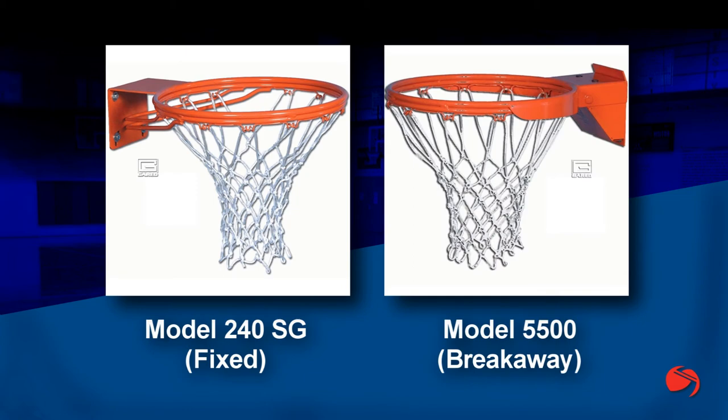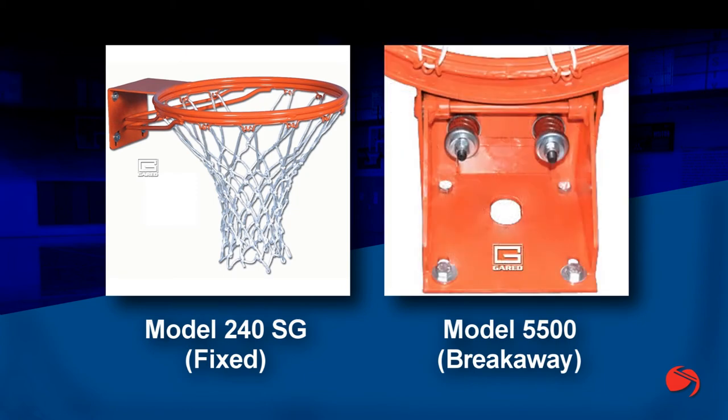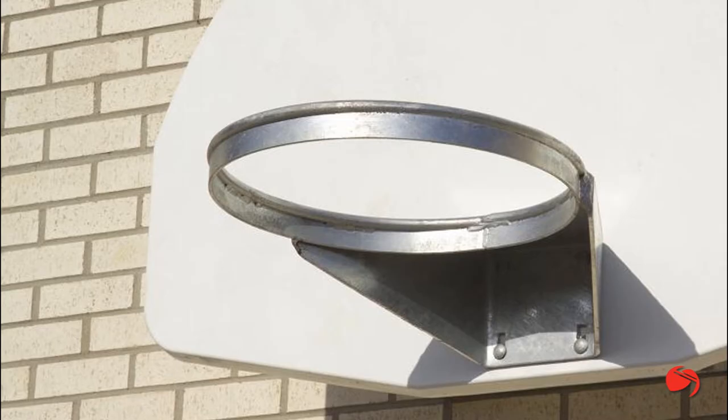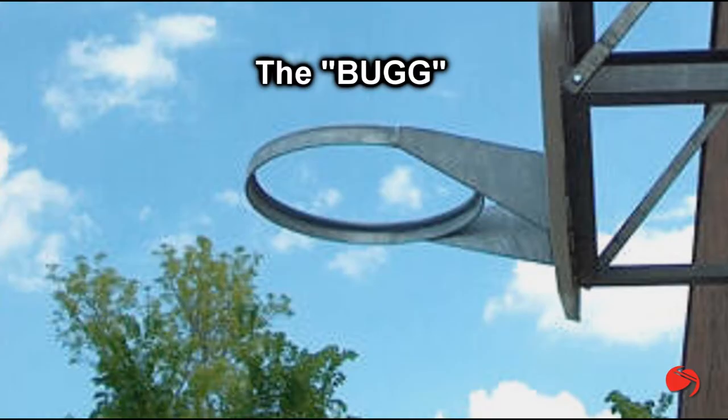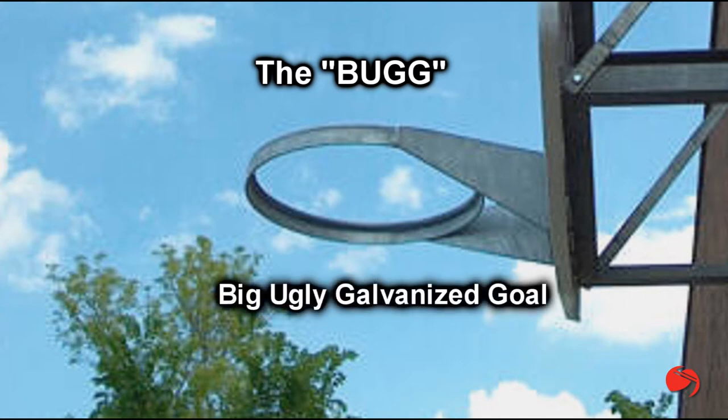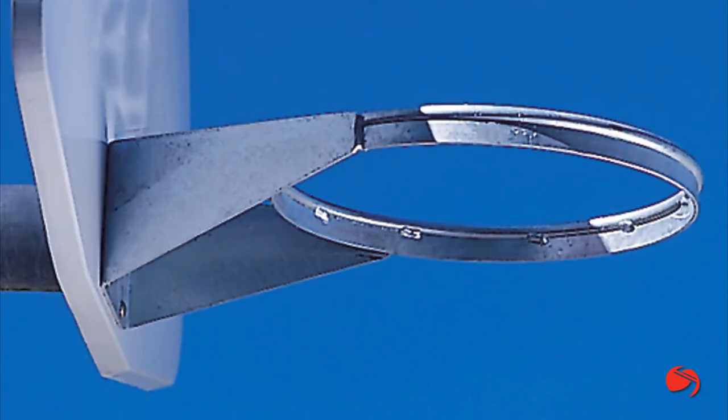The model 240 SG is a fixed goal and the model 5500 is a breakaway design. Our third goal for this system sets the industry benchmark for durability. This unit is affectionately referred to as the BUG, or the big ugly galvanized goal. It boasts a 5/8 inch cold rolled steel rim and a 1 inch by 1/8 inch flat bar welded to the rim for extra strength.